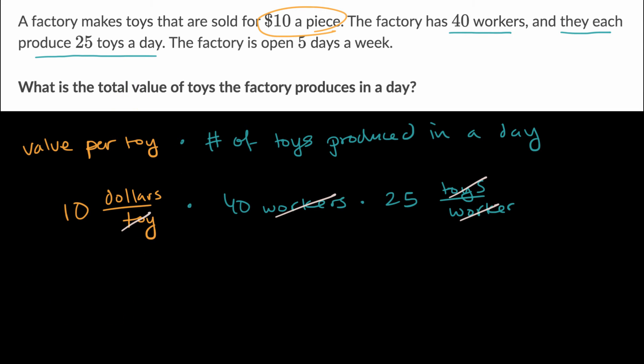And so this is going to be equal to 10 times 40 is 400. And then 400 times 25, let's see, that's going to be four times 25 times 100. So that's 100 times 100, which is 10,000. And then the units we're left with is dollars.